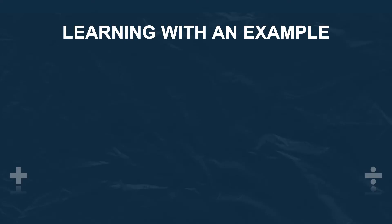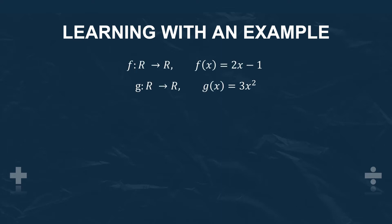The best way to solidify this theory is learning with an example. We are provided with two equations, f of x and g of x. f of x being 2x minus 1, and g of x being 3x squared. I hope you guys are familiar with the domain notation here, r into r. If you're not, please touch up on this before continuing with this example.